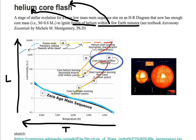When stars are growing or getting smaller — such as when they're being born or when they're dying — they don't fit on the main sequence; they're above or below it. So we're looking at stages of stellar death for low-mass stars like the Sun.